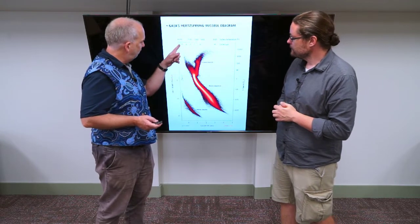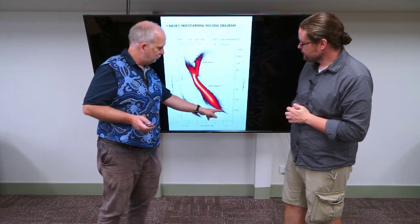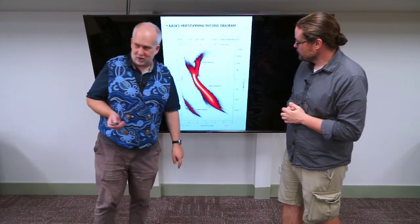So let's talk about this main sequence. So it goes all the way from very hot stars, O and B stars. There aren't very many, but there are a few up here. All the way down to really pathetic little M stars.